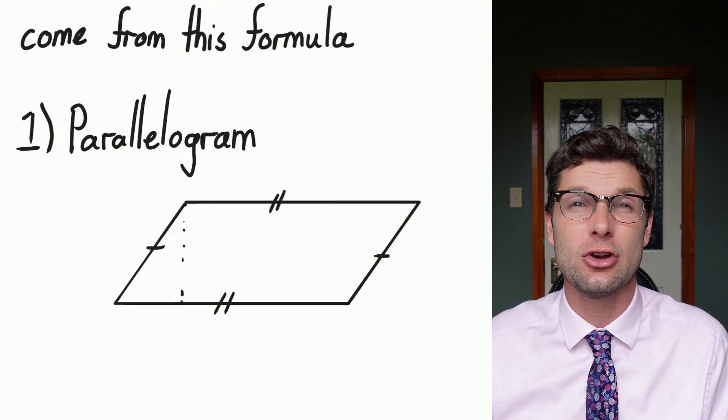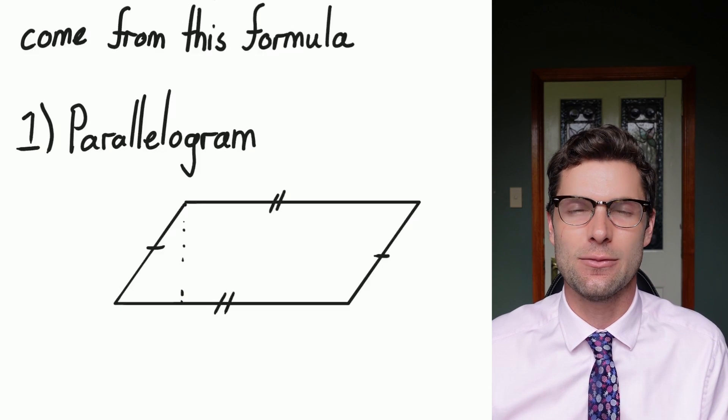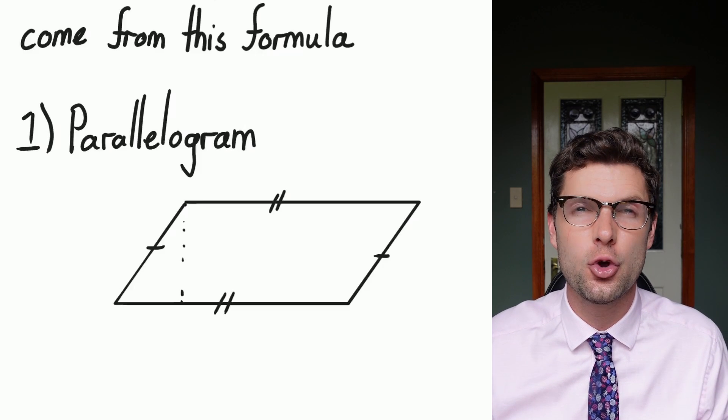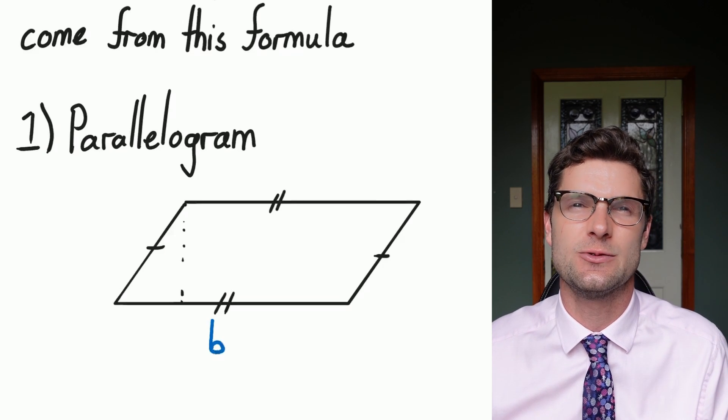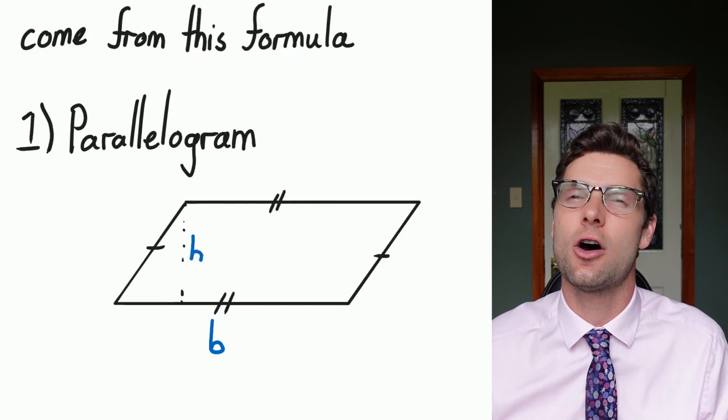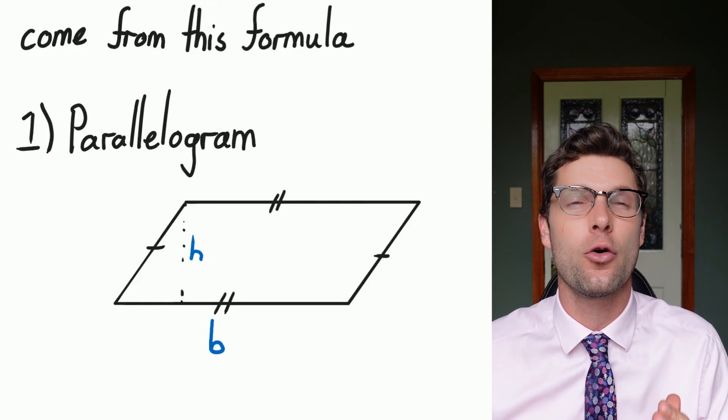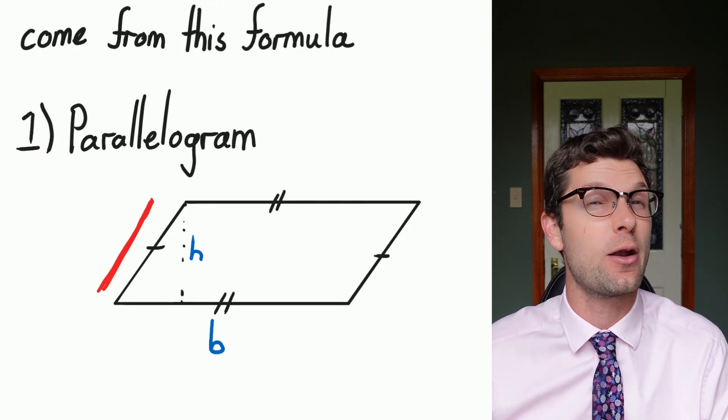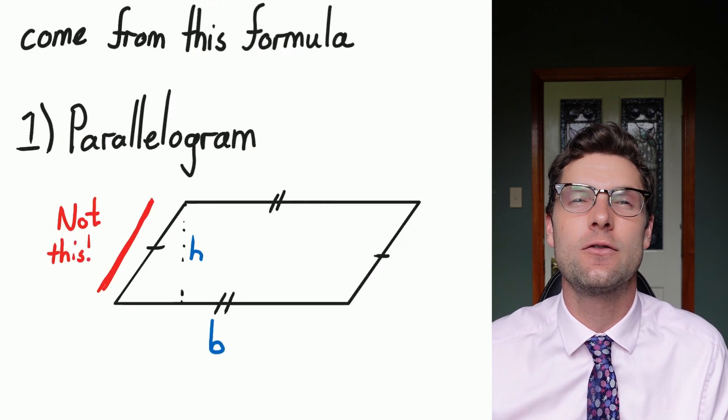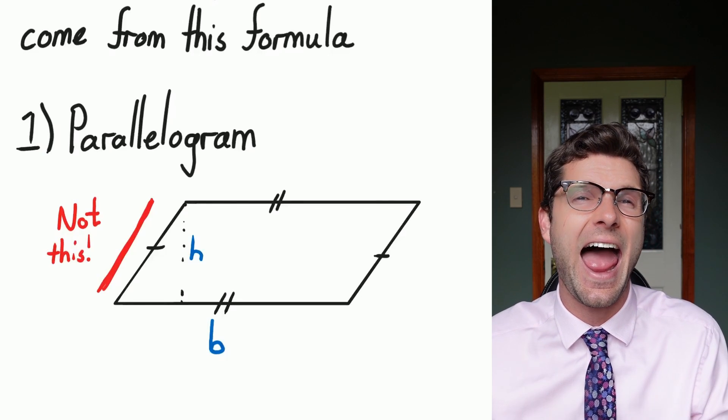So the first one that we're going to look at is the area of a parallelogram. So this is where we've got two sets of parallel lines that are the same length. So it kind of looks like a rectangle has been pushed over. There's only two important measurements that we need for this one. The base there is B, and the other measurement that we need is the height of the parallelogram, and we're going to call that H. What's really important is that we're not looking at the side length or the slanted side length for this one. We do not need this measurement in order to find out the area.